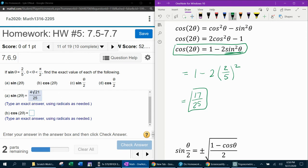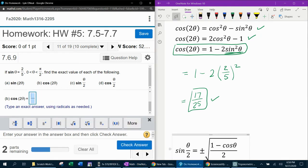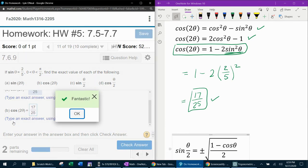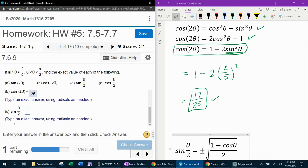And that should be the answer for cosine of 2 theta. Now, I would like to point out, if you decide to use one of these other two formulas, you should get the same answer. It shouldn't matter which formula you choose. So, let's see here. 17 twenty-fifths. And then it wants sine of theta over 2.